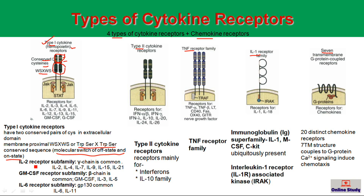Only Type 1 cytokines bind to this Type 1 cytokine receptor. This Type 1 cytokine receptor is also classified into three subfamilies: the first is the IL-2 receptor subfamily, the second is the granulocyte-monocyte colony-stimulating factor receptor subfamily, and the third is the IL-6 receptor subfamily.